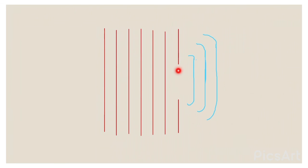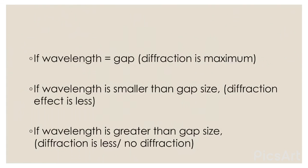When the gap size is larger than the wavelength then there is very little diffraction, and the diffracted waves will be curved. If the wavelength is equal to the gap then the diffraction is maximum. If the wavelength is smaller than the gap size then the diffraction effect will be less. If the wavelength is greater than the gap size then the diffraction will also be less or there may be no diffraction at all.